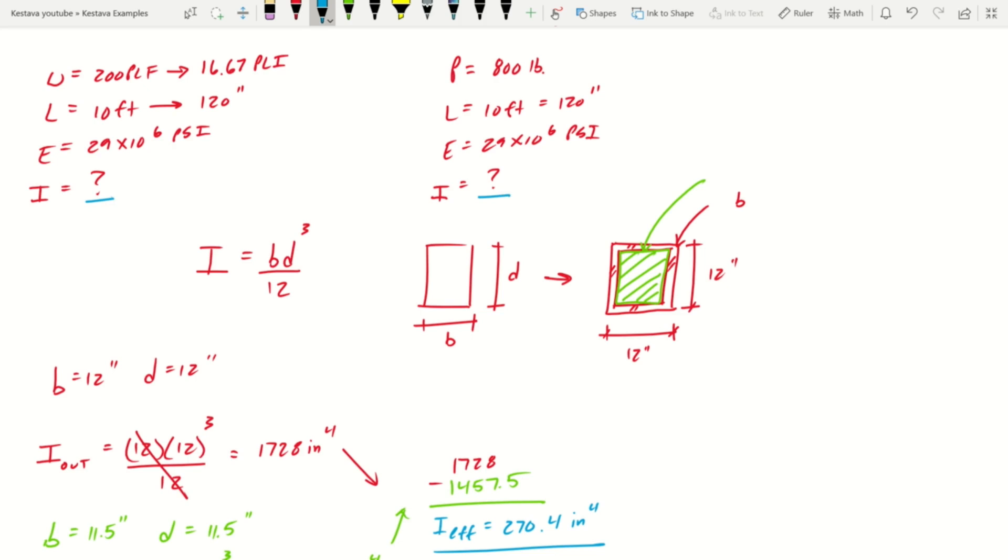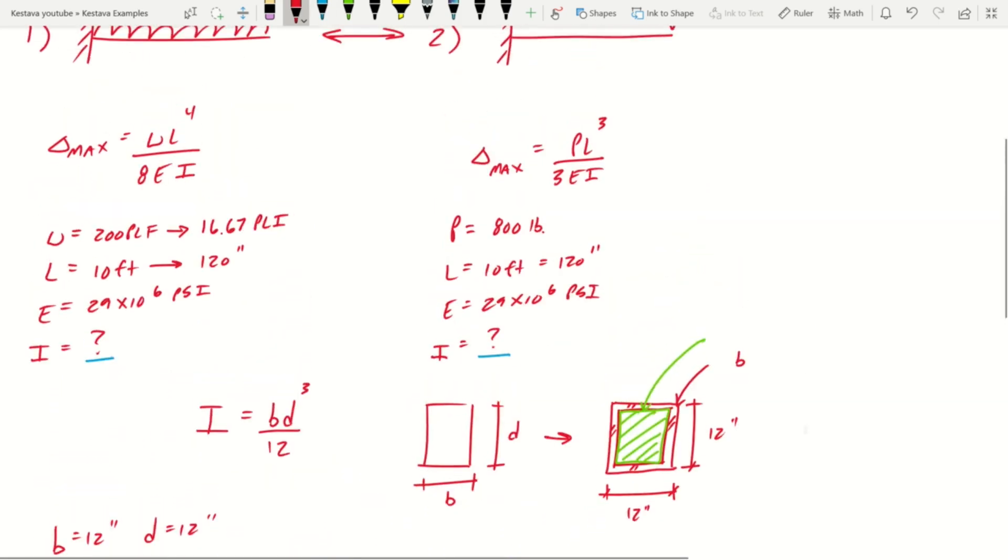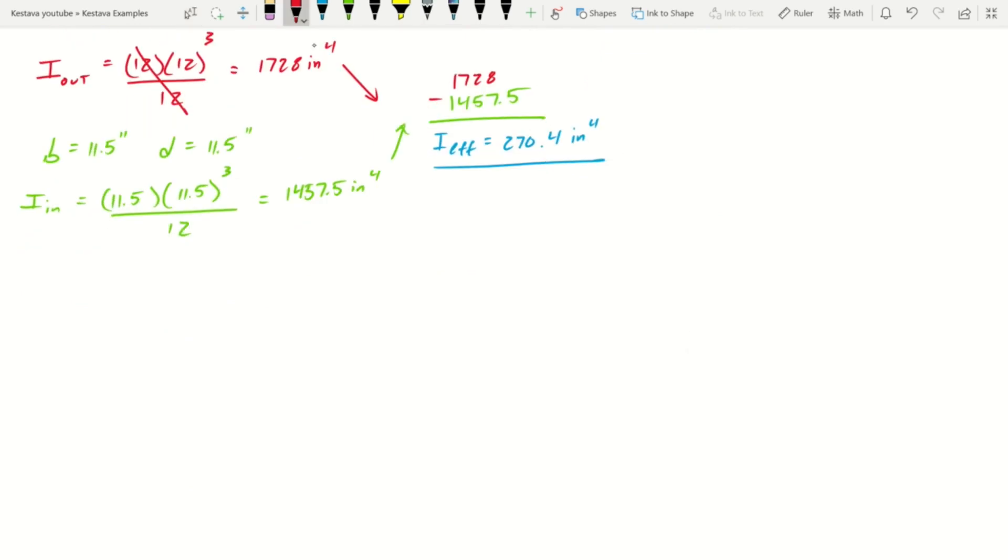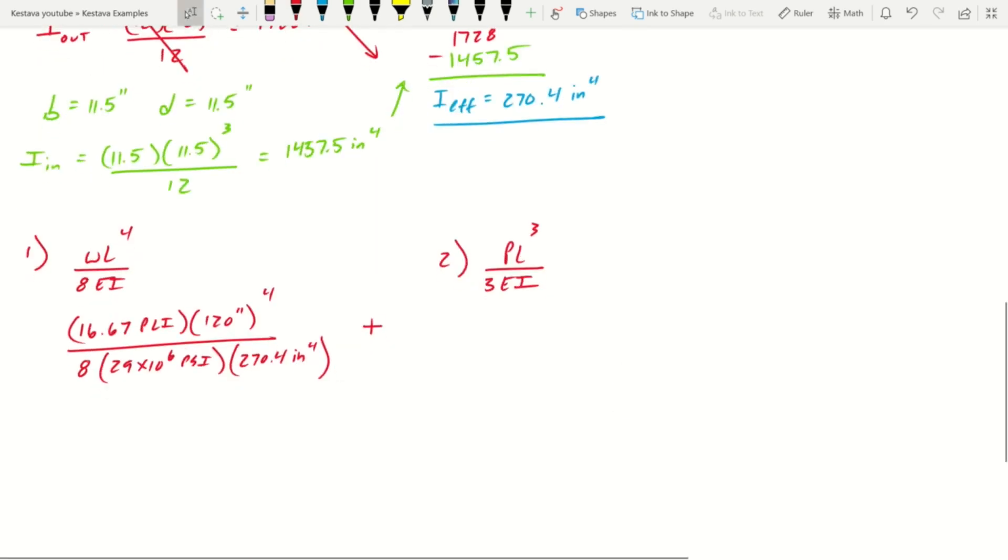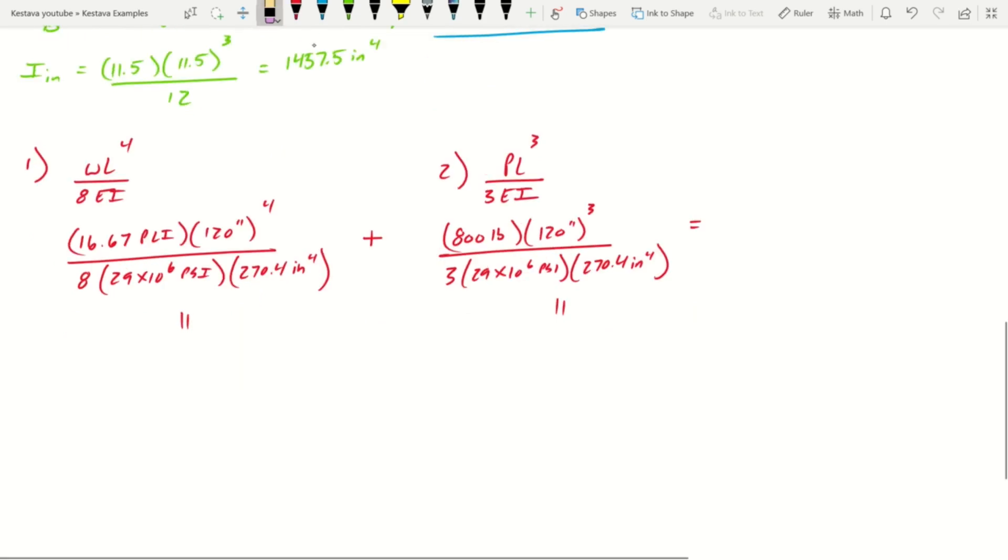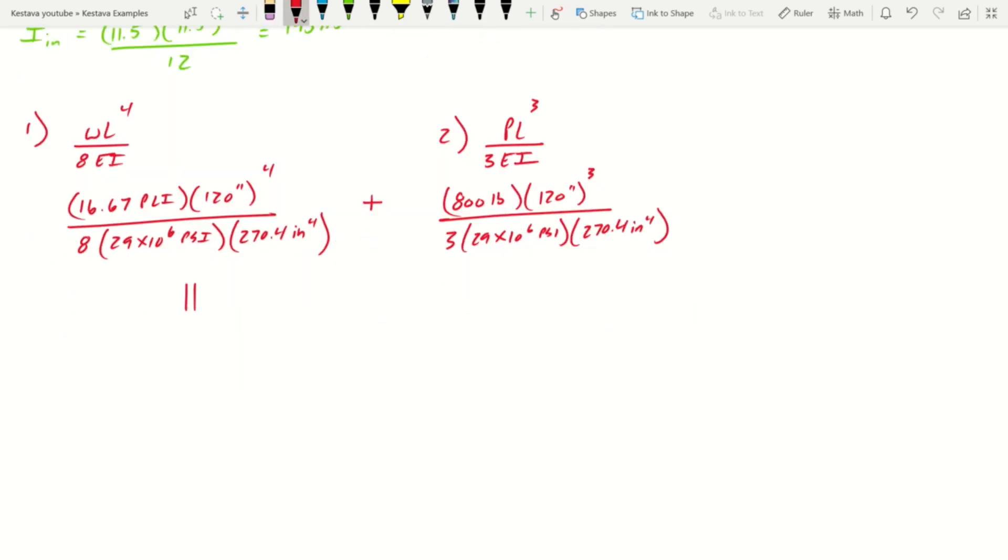That means we can go back up and we now know our last variables. Let's plug everything in now. For equation one, which is wL to the fourth over 8EI, that's going to be 16.67 pli times 120 inches to the fourth. That gets us equation number one, all that jazz gets us 0.055 inches.